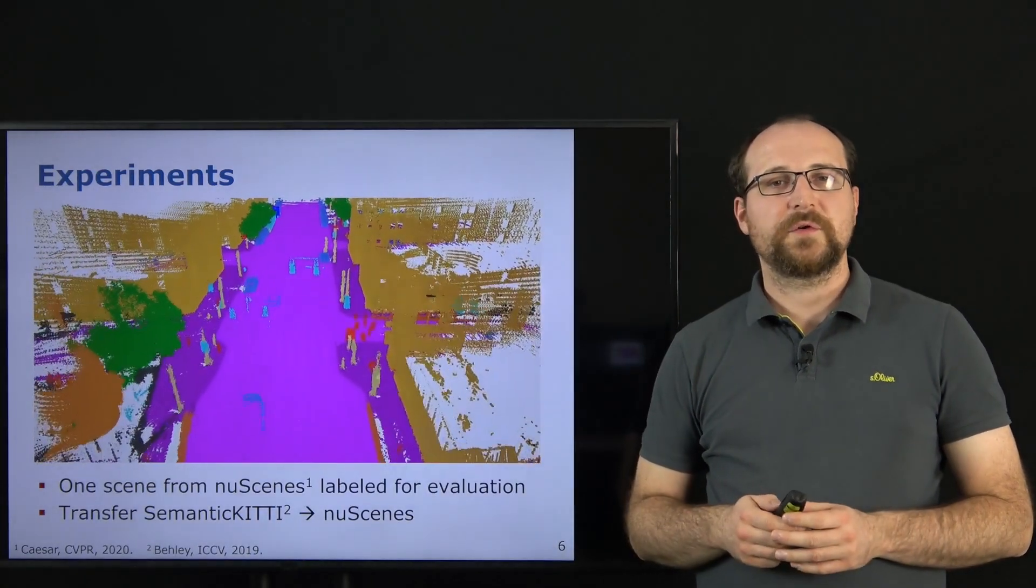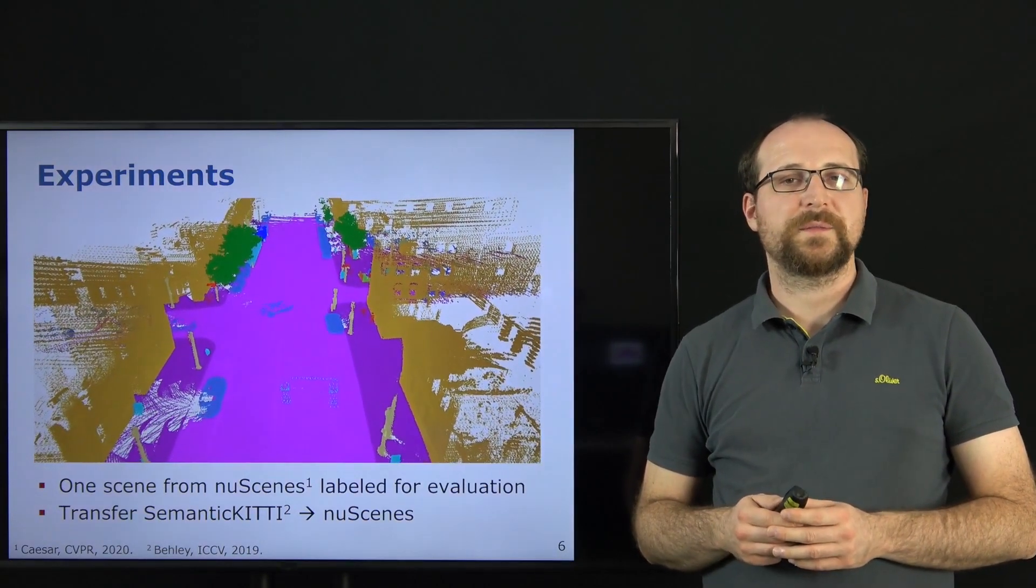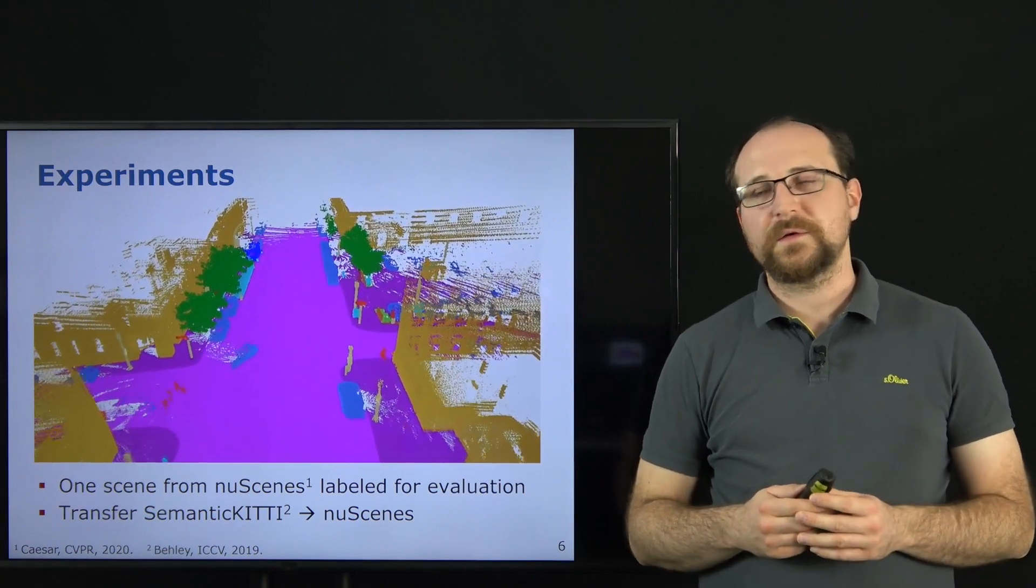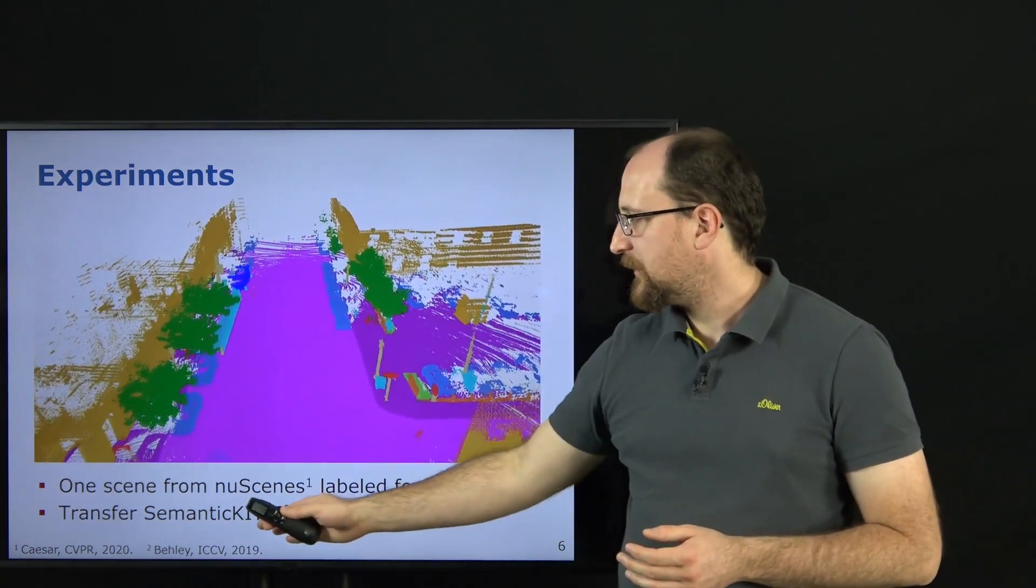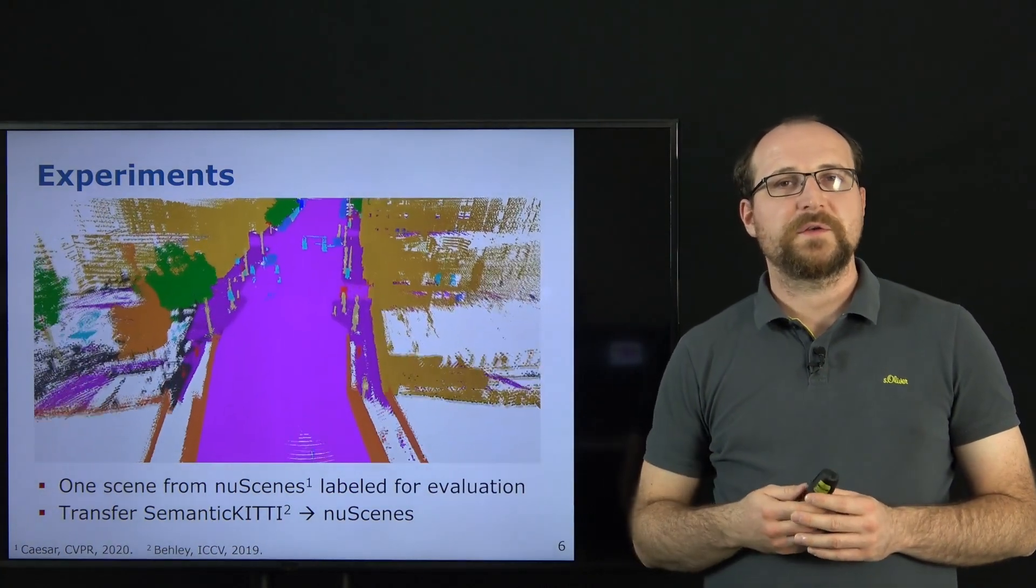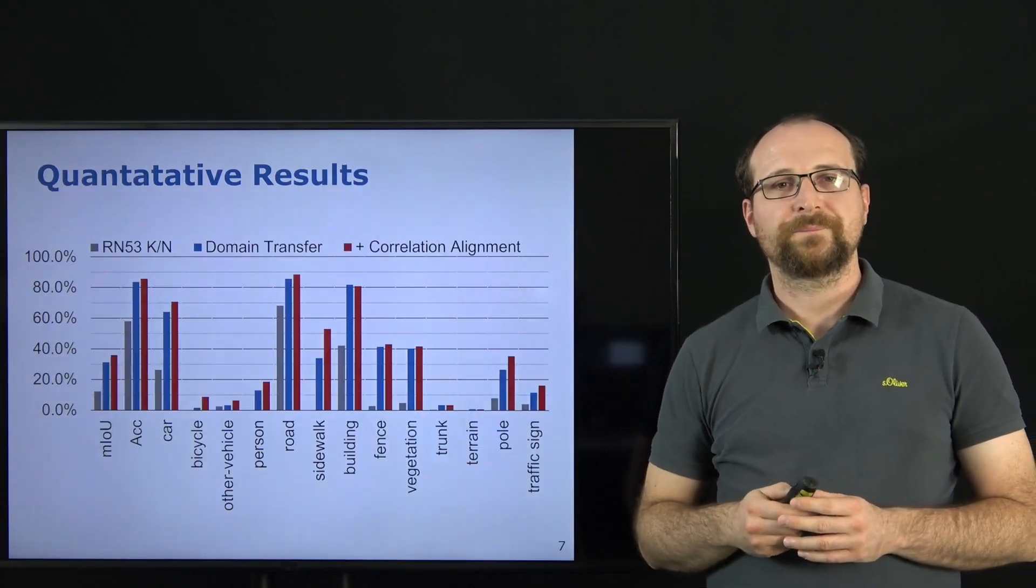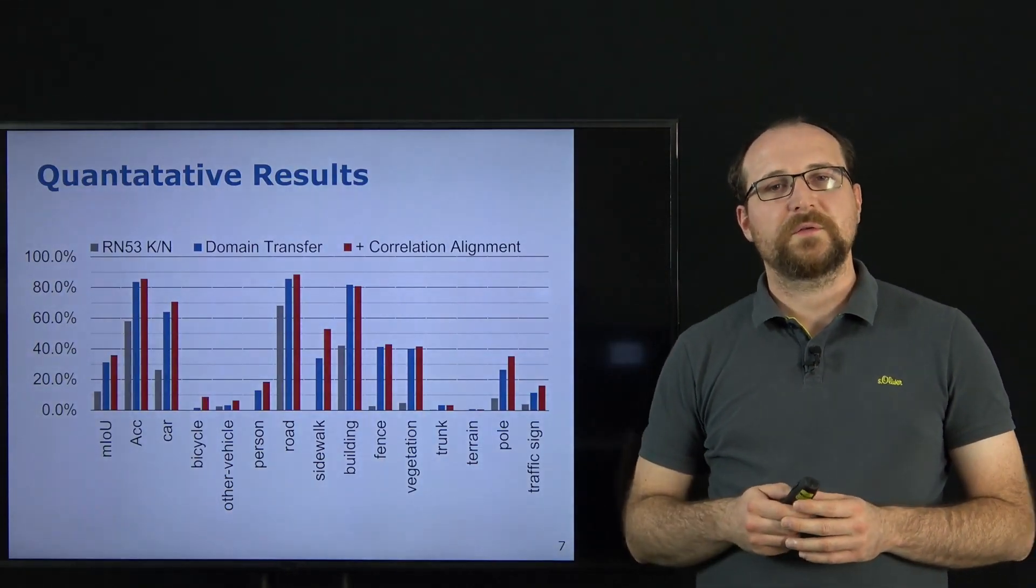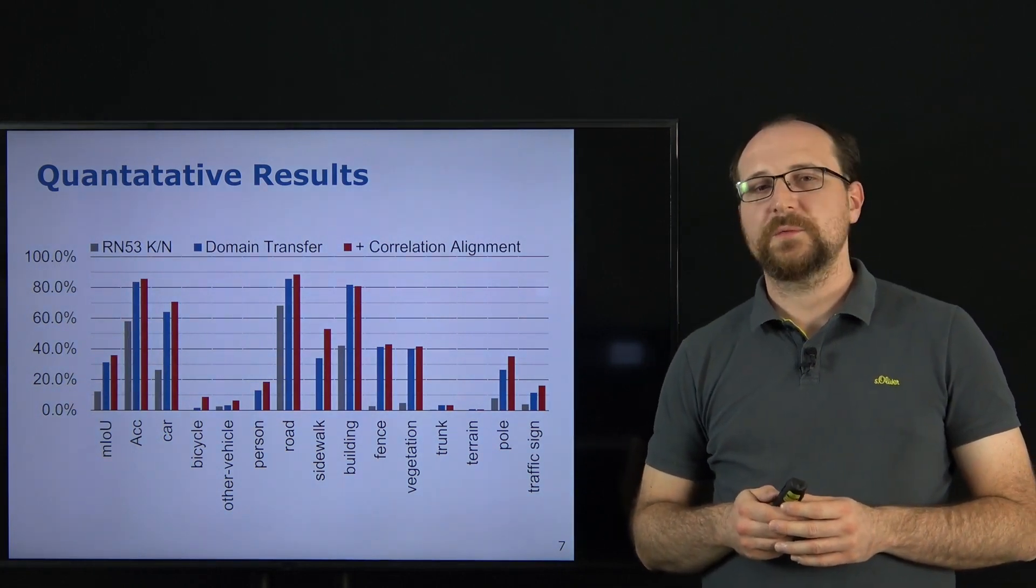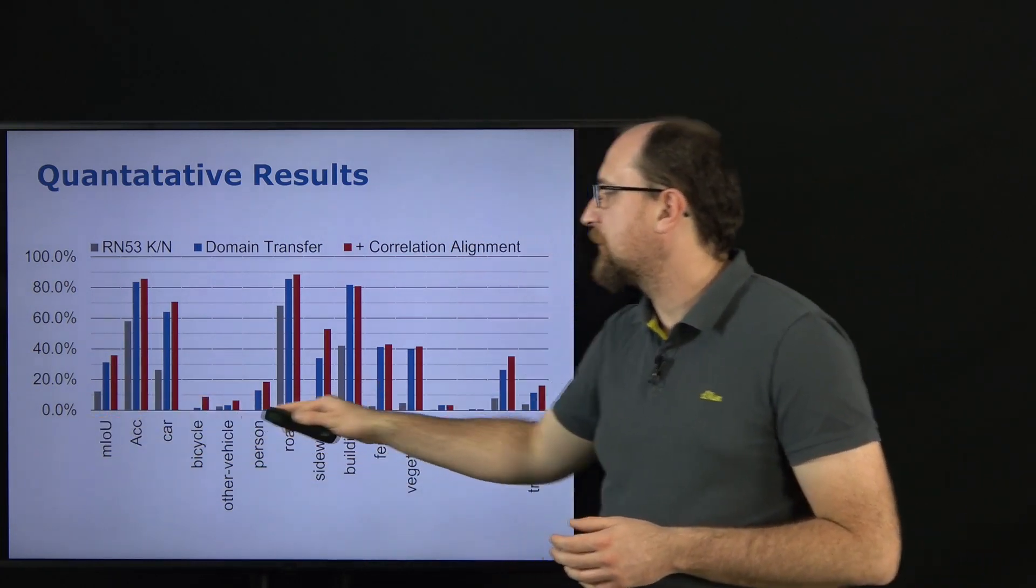We evaluated our approach on a scene from the nuScenes dataset, which we manually labeled to determine the performance of a semantic segmentation network, trained either only with the original SemanticKITTI dataset or with our synthetically generated point clouds from this dataset. Our results show that the RangeNet trained only with the original SemanticKITTI data performs poorly, reaching below 20% mean intersection over union, shown here by the gray bars.